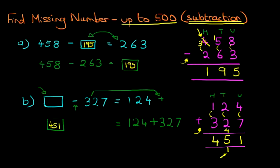We can write this in the original question. 451 minus 327 equals 124. So the missing number was 451. And it really is that simple.